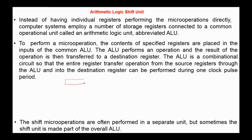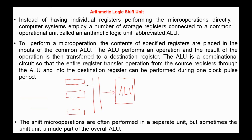So instead of performing the operations directly on registers, register contents are transferred, for example, through a bus to the ALU. In the ALU, the operation is performed and the result is transferred back to the destination register. The ALU is a combinational circuit so that the entire register transfer operation from the source registers through the ALU and into the destination register can be performed during one clock period. The shift micro operations are often performed in a separate unit, but sometimes the shift unit is made part of the ALU.